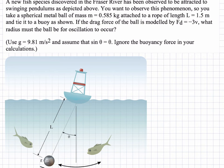In this problem, we have a new fish species discovered in the Fraser River that has been observed to be attracted to swinging pendulums as depicted in the figure. You want to observe this phenomenon, so you take a spherical metal ball of mass 0.585 kilograms attached to a rope of length 1.5 meters and tie it to a buoy as shown in the figure.